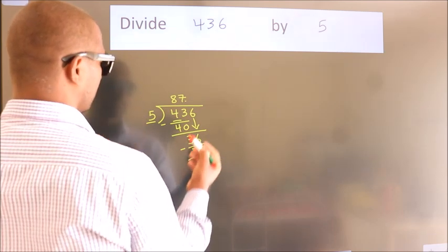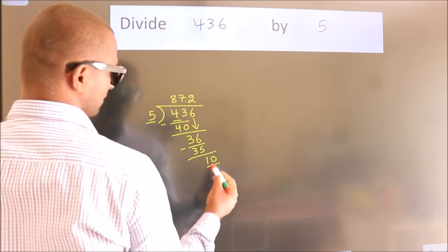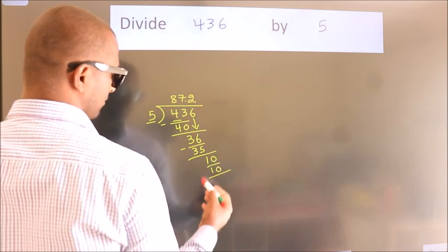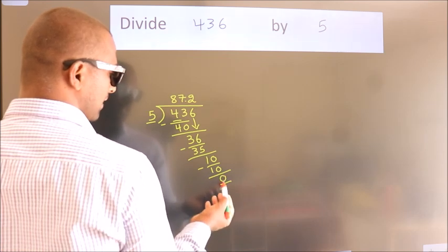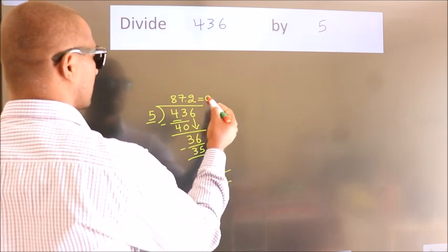5 2s 10. Now we subtract. We get 0. We got remainder 0. So this is our quotient.